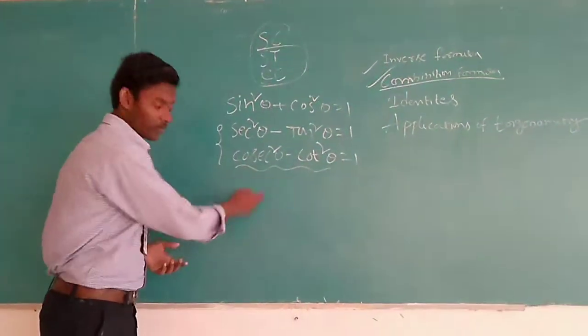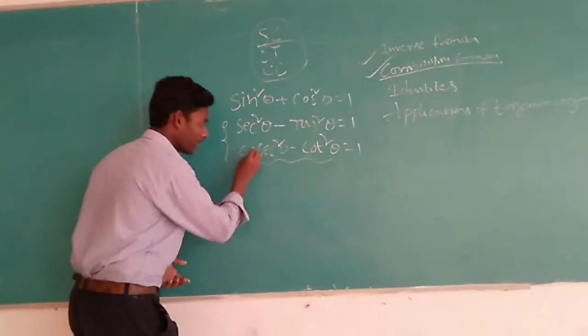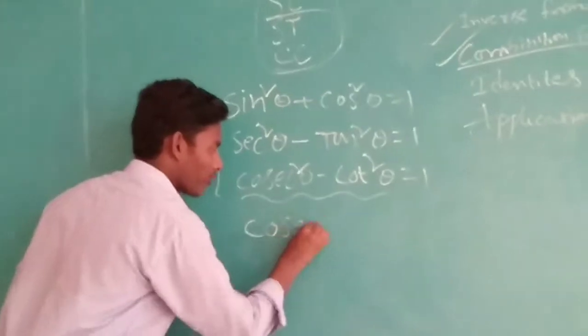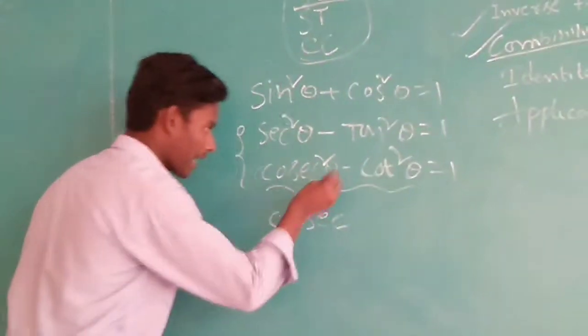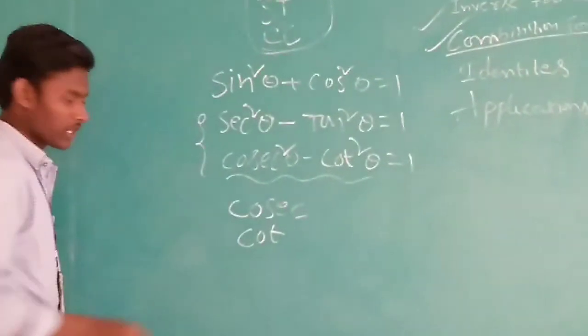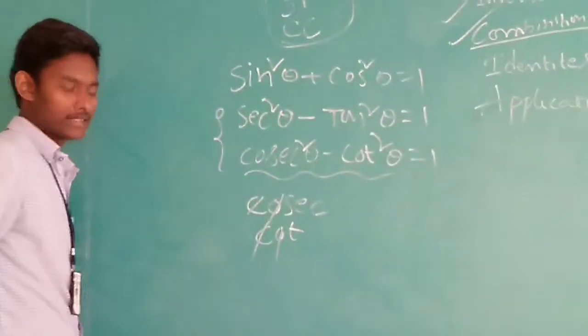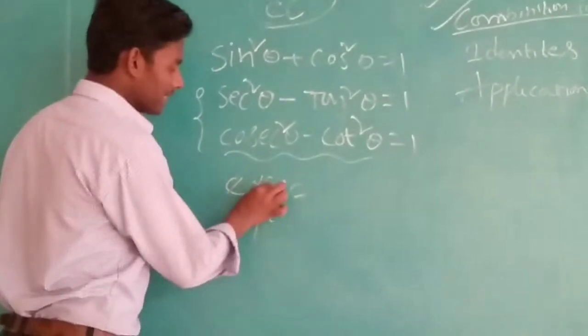So focus on this. Here, cosecant square theta we can write like this. Cot we can write like this. C, C gets cancelled. O, O gets cancelled.